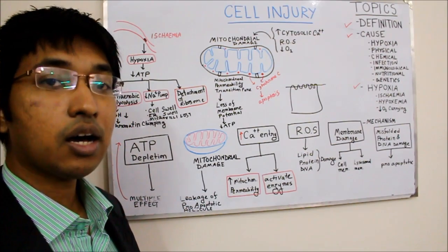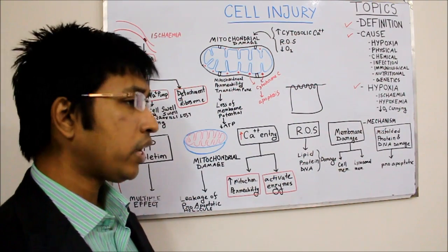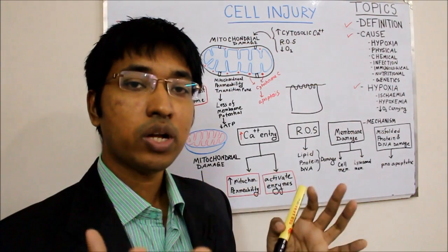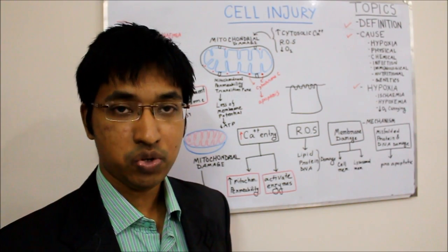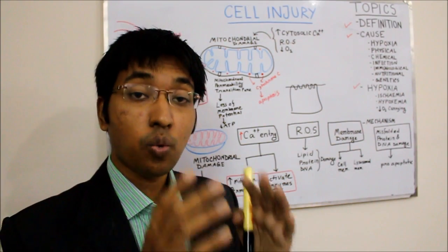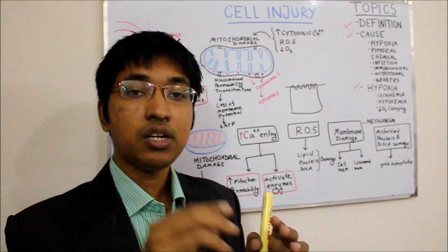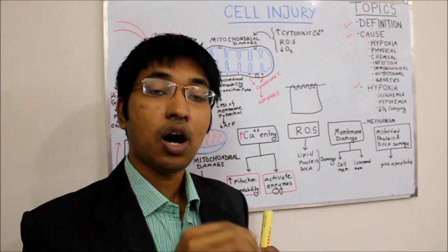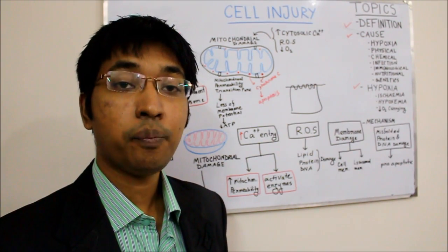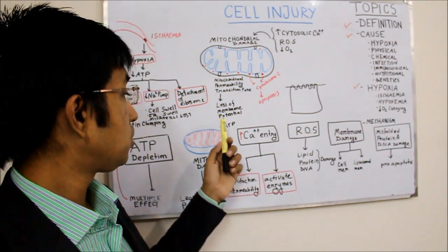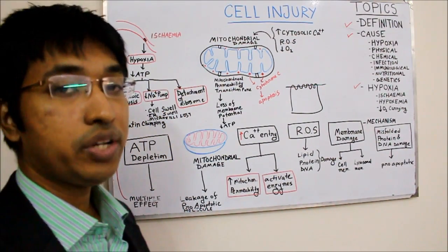The last mechanism by which ATP depletion can cause cell injury is when the endoplasmic reticulum swells up. The rough endoplasmic reticulum has ribosomes attached to it. When those rough ER are swelling up, the ribosomes will detach. Since ribosome is the site of protein synthesis, there will be reduced amount of protein synthesis. That concludes the first mechanism by which cell injury can occur.